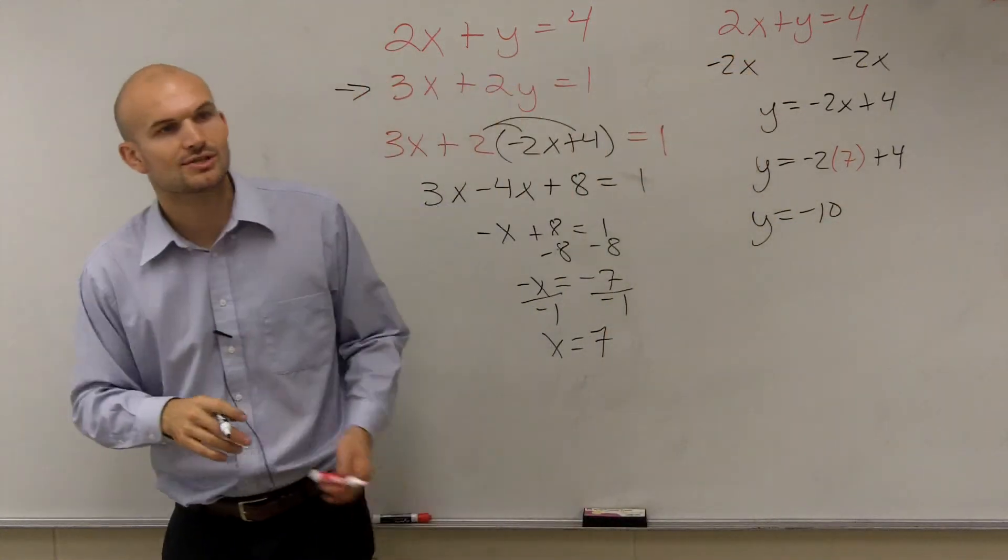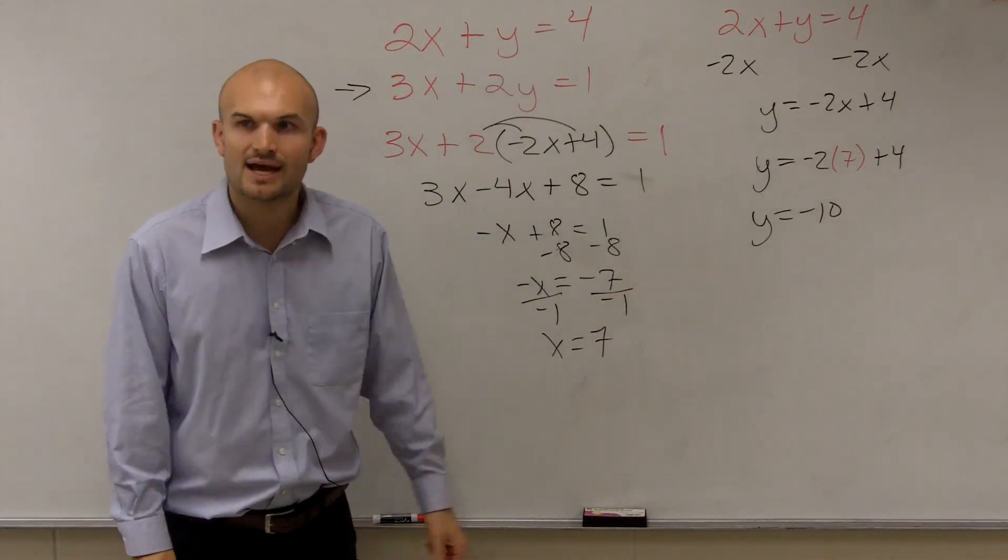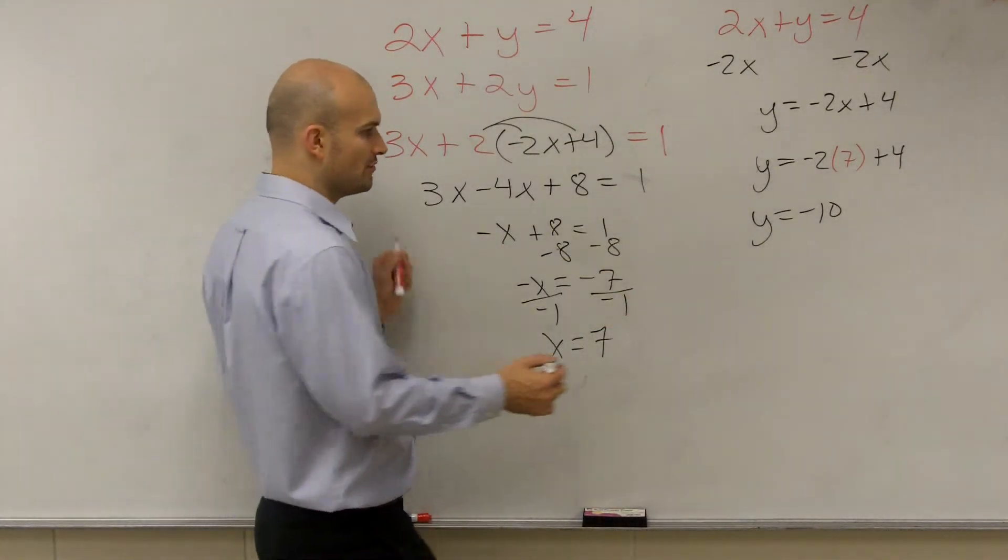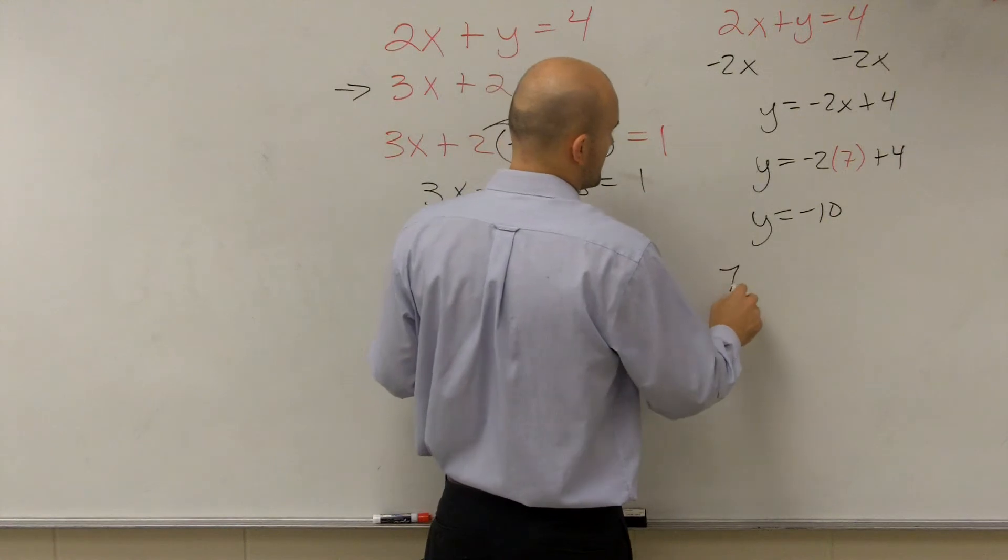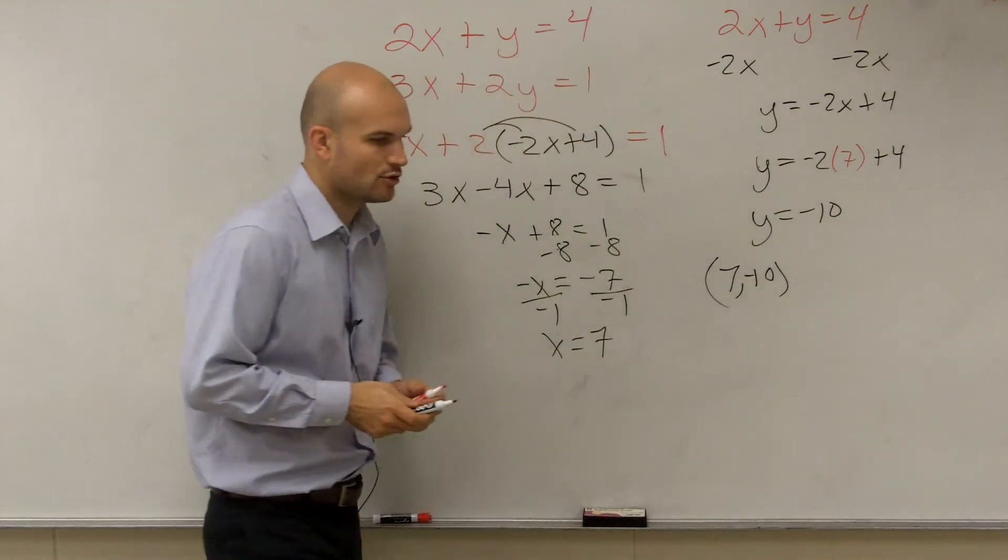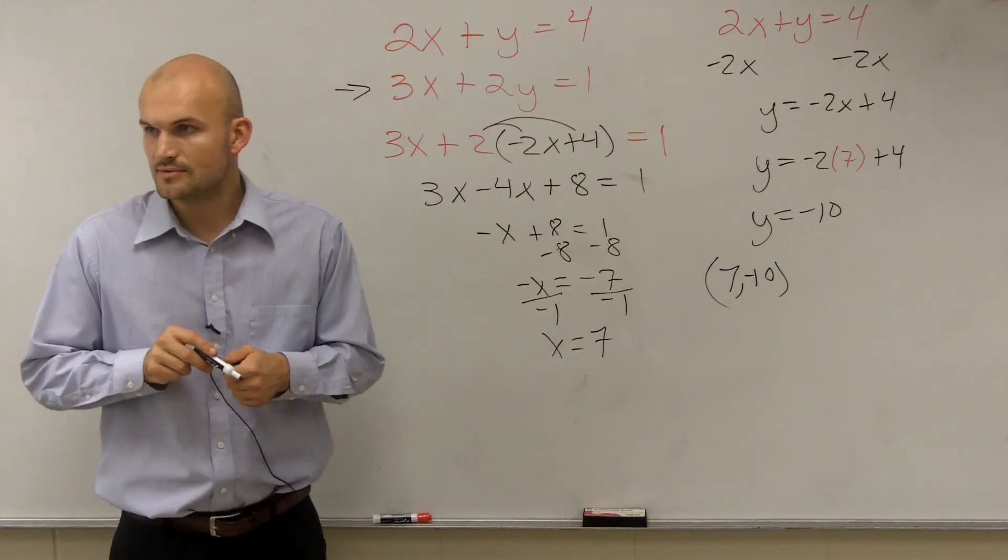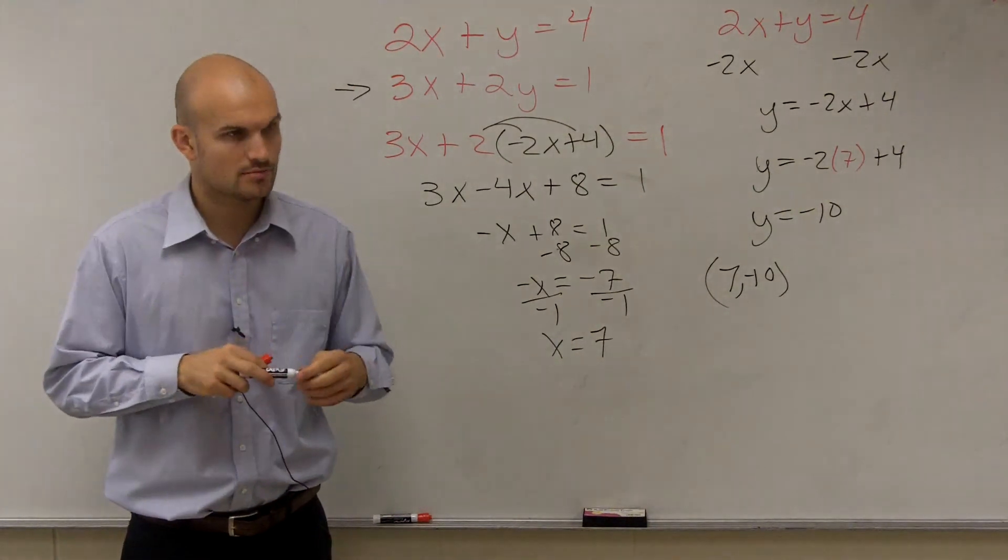So therefore, the solution that makes my equation true is 7 and negative 10. And remember, when we looked at graphing, we wrote that as a coordinate point. So I want you to write your solution as a coordinate point, which would be 7 comma negative 10. Any questions? Good? Awesome.